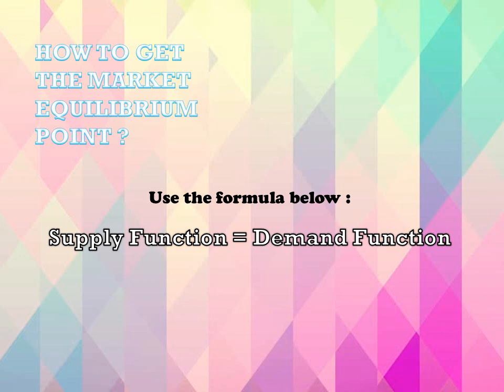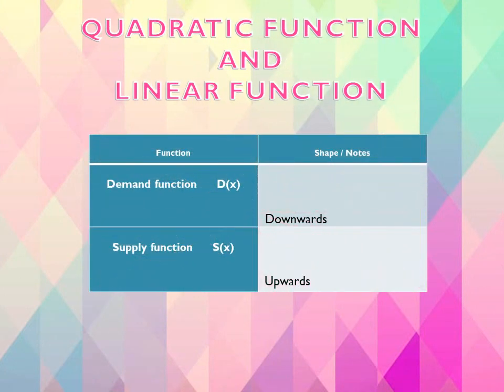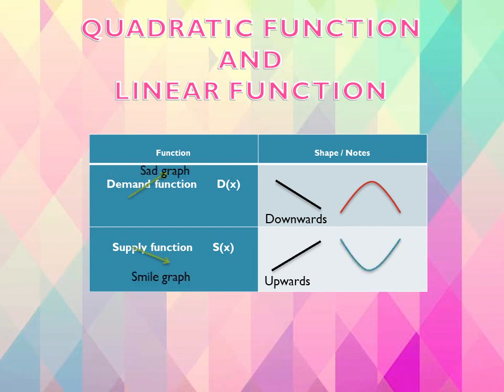Set the supply function SX equal to the demand function DX. In the demand function, the linear function graph looks downwards from left to right, and the quadratic function graph gives a set graph shape. In the supply function, the linear function graph looks upwards from left to right, and the quadratic function graph gives a small graph shape.